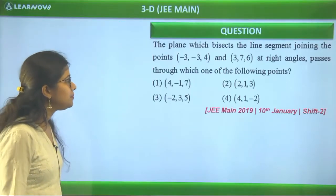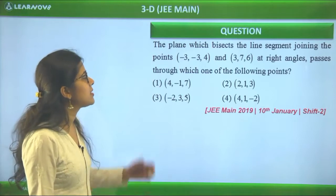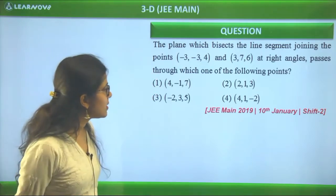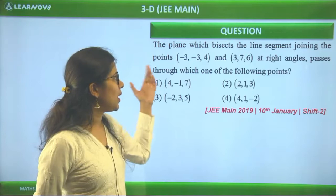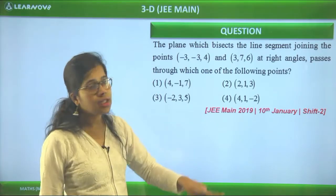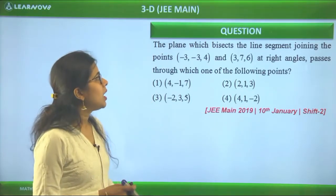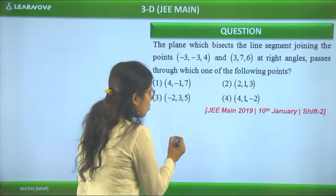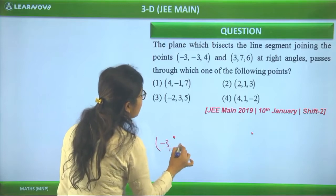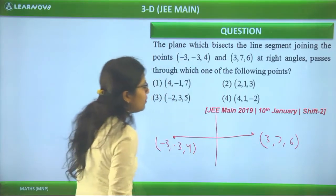Next question from January Shift 2: The plane which bisects the line segment joining two given points at right angles — through which of the following points does it pass? So we need to find the equation of the plane. The two points are (-3, -3, 4) and (3, 7, 6), and the plane perpendicularly bisects the segment joining them.